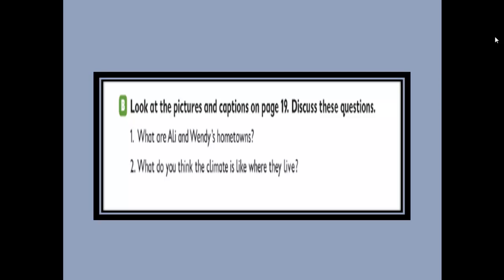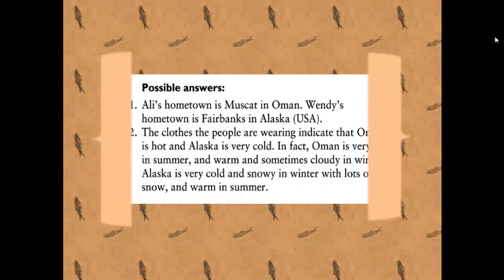Number two: what do you think the climate is like where they live, where they settle down? From the picture we can deduce the answers. Ali's hometown is Muscat in Oman, whereas Wendy's hometown is Fairbanks in Alaska. Ali is from Oman and Wendy is from the USA, Fairbanks in Alaska.